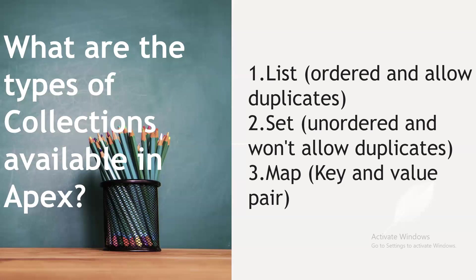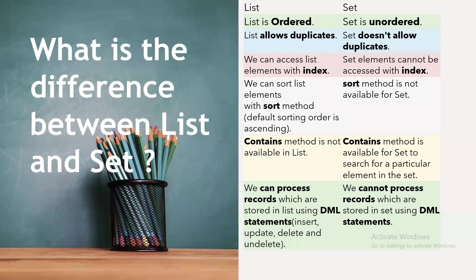Set is another collection — it does not allow duplicates. Map is a key-value pair collection, storing data as key and value pairs.